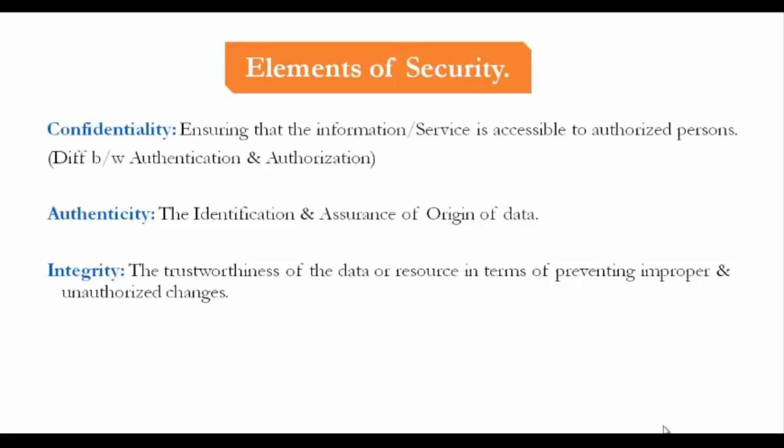The next element is authenticity — the identification and assurance of the origin of data. The next is integrity: the trustworthiness of data or a resource in terms of preventing improper and unauthorized changes. For example, a message I send to a destination should not be modified before it actually reaches that destination — that is ensuring integrity.